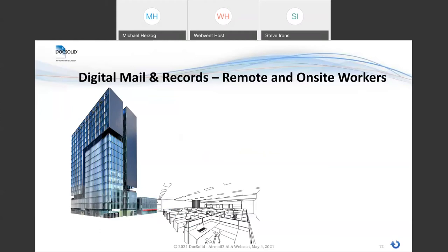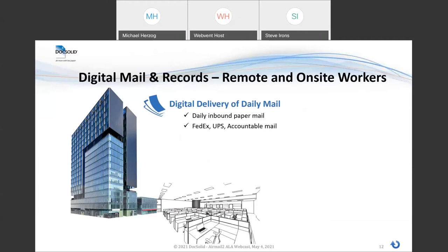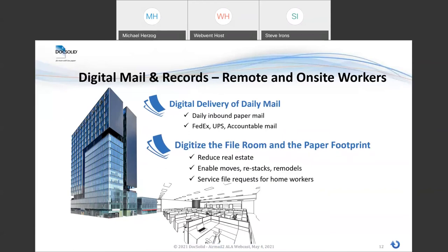Let's talk about digital mail and records for workers in home offices, but also using the same systems for workers who come back to the downtown office. We don't want to run a digital system for home workers and a paper system for the office. Once we go digital, we don't want to go back. The daily mail shows up at the downtown office — U.S. postal mail — and though we don't get as much as we used to, what does show up can be vital to the practice of law. We also get FedEx and UPS documents and other accountable mail, and review and calendaring of this mail is oftentimes critical. We need to deliver this mail digitally now, and our file rooms are occupying floor space that we want to get back.